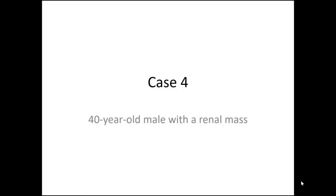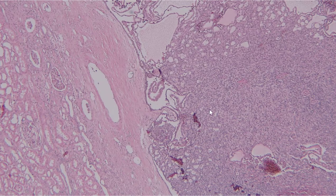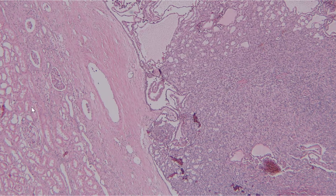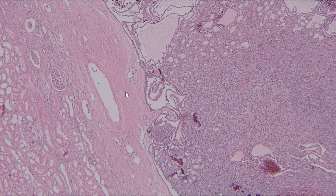Now for case number four. This is a 40-year-old male with a renal mass. Here we can see the tumor has a relatively sharp border between itself and the renal parenchyma. In this case, there does appear to be evidence of a fibrous capsule separating the two.